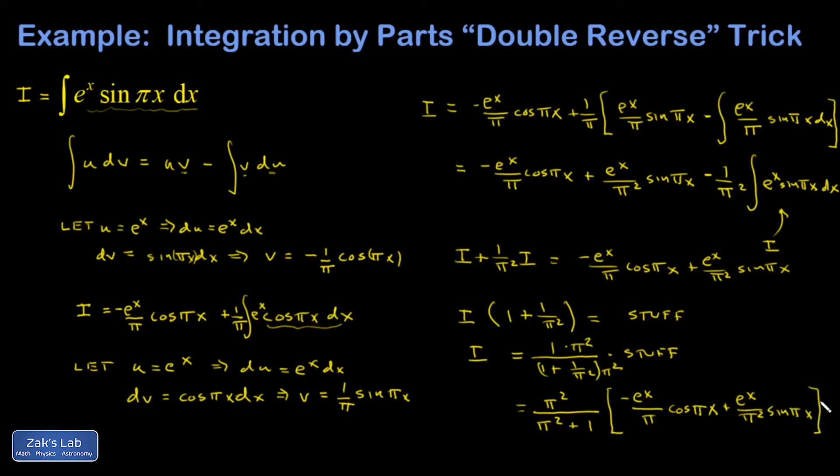So this is a classic move whenever you're trying to integrate something that has two terms where neither one of them is going to get simpler when you differentiate it. Finally, if you like, you could clean this up a little bit by distributing the π² into the interior and pulling out the e^x. So I have e^x over (π² + 1) times the quantity negative π cosine πx. And π² distributed to this one leaves me with no π's on the sine term, so sine πx. That looks a little bit cleaner.